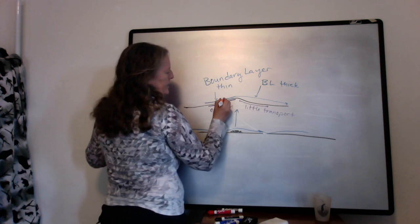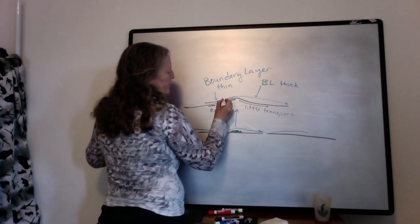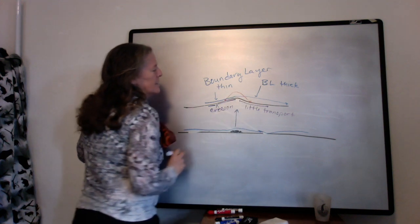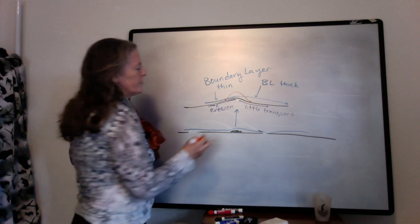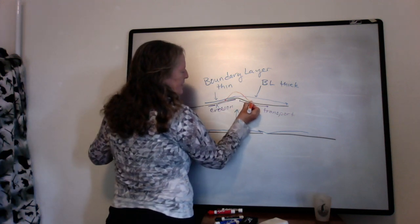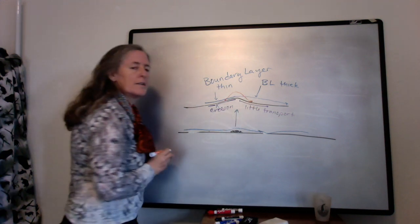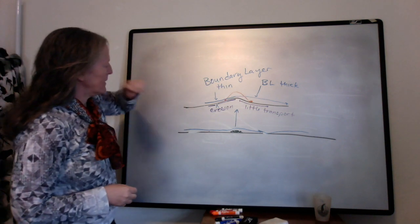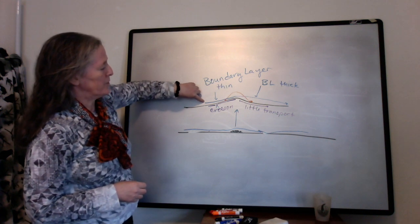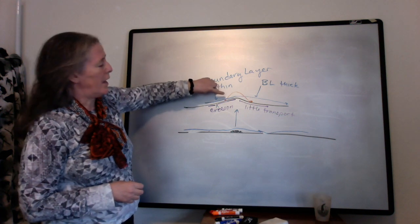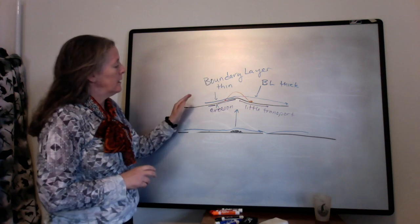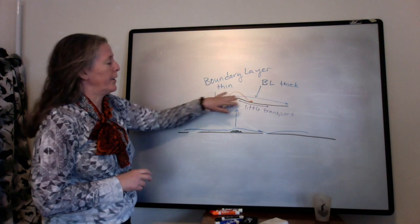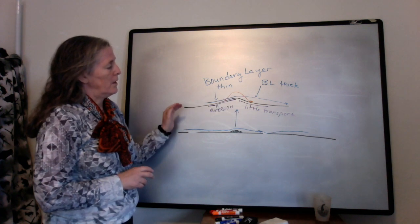So if we have a grain here that gets picked up into the flow, and it's saltating, and it happens to land in the zone with a thick boundary layer, it tends to stay there. So what this is doing is it's connecting the characteristics of the boundary layer to when and how sediment gets eroded or transported along a bed.